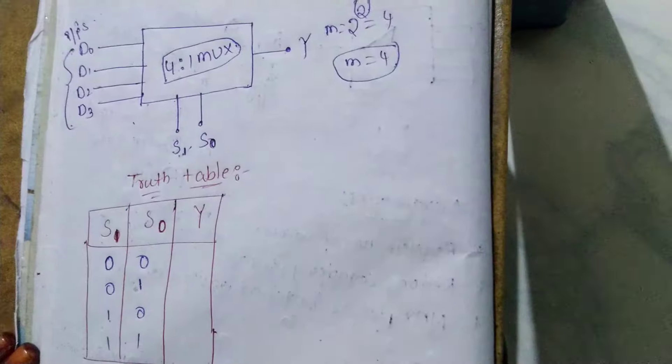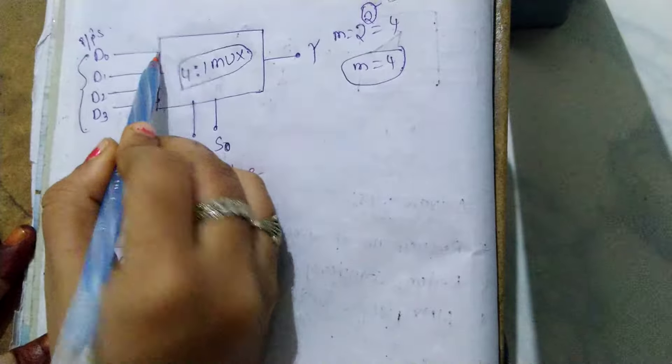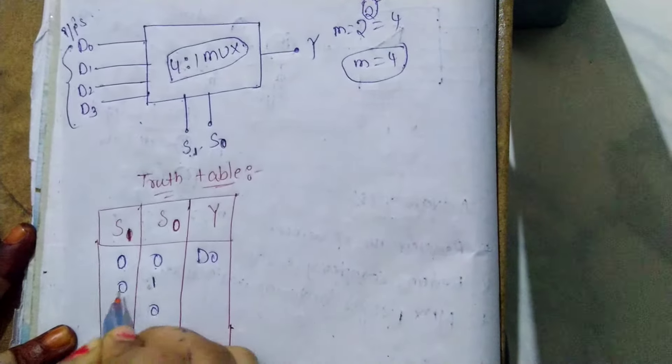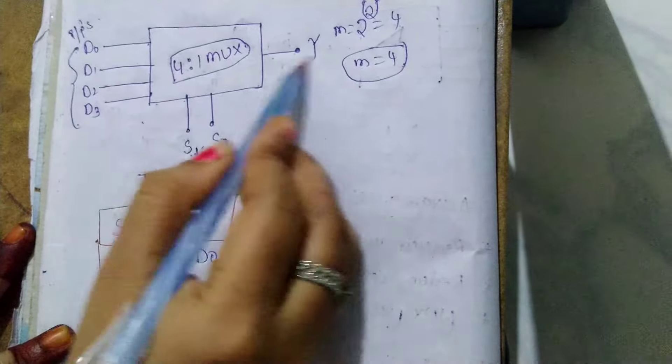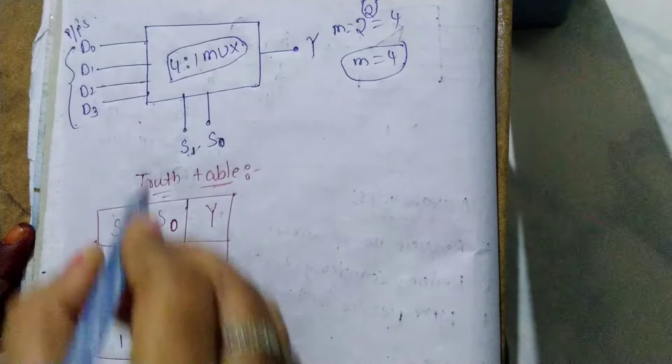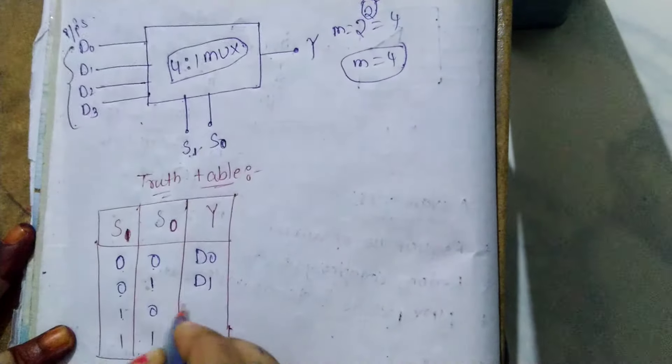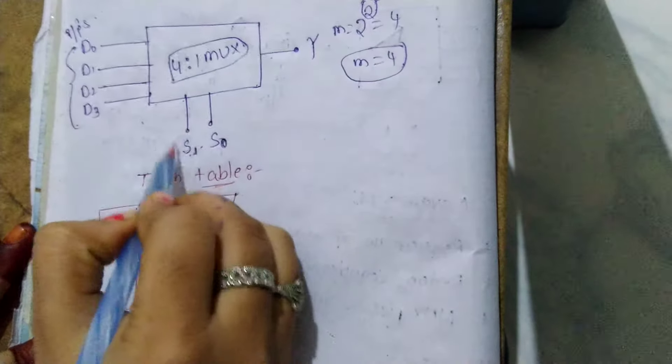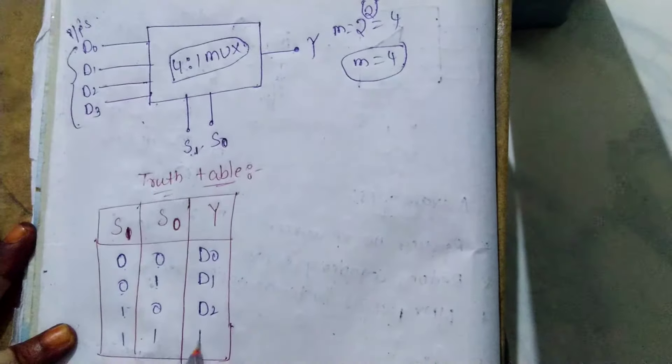When it's 00, consider output D0. When 01, consider output D1. When 10, consider output D2. When 11, consider output D3.